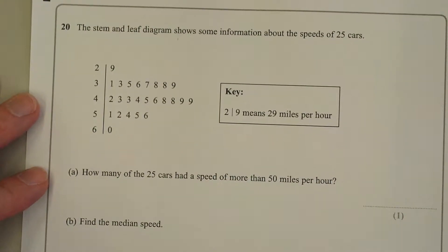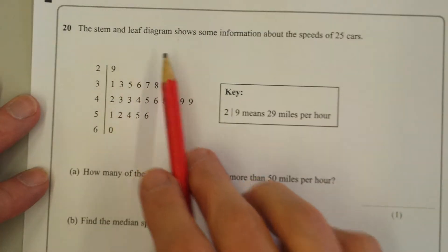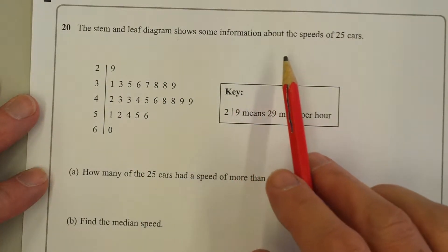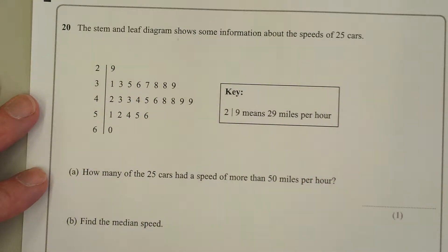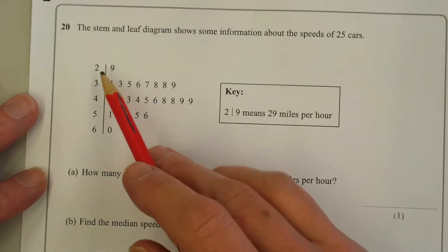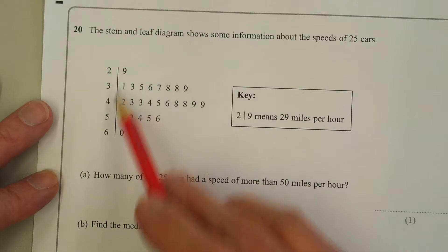Question 20 is about stem and leaf diagrams. The stem and leaf diagram shows information about the speeds of 25 cars. This is the stem here and these are the leaves.